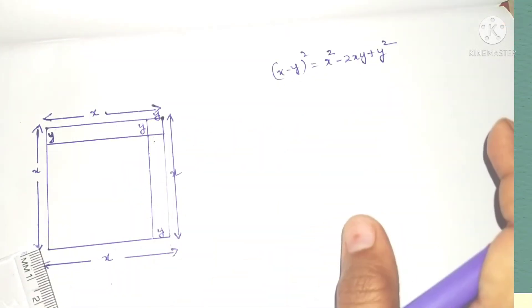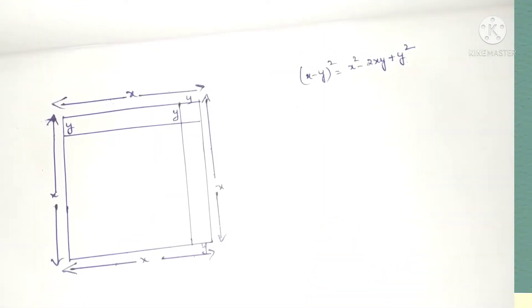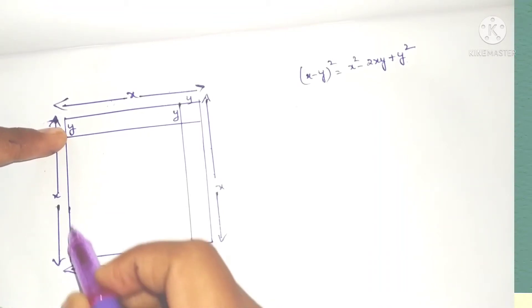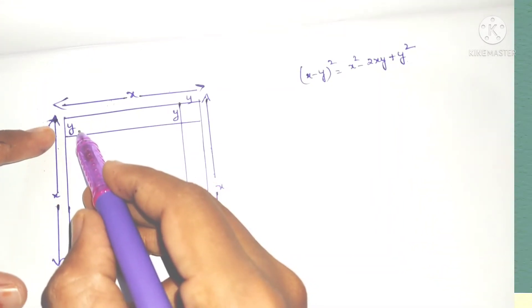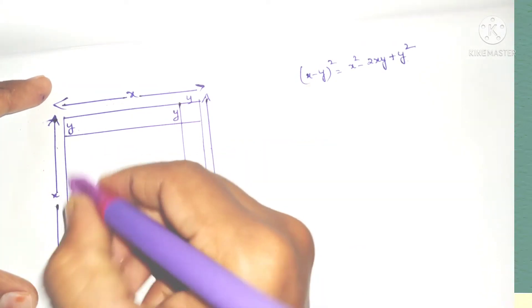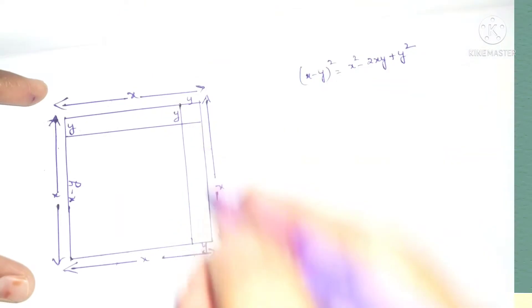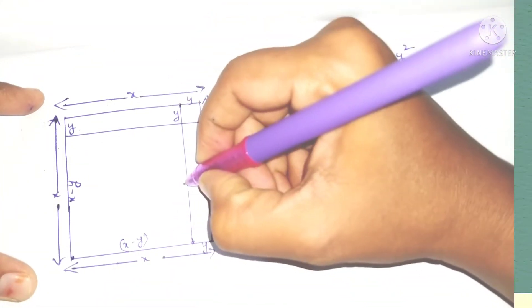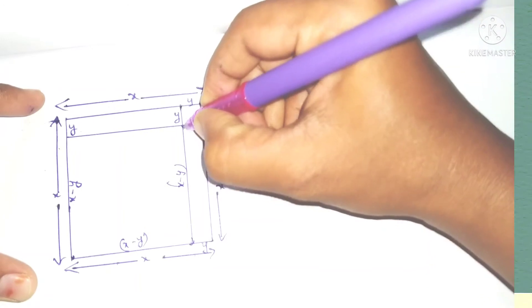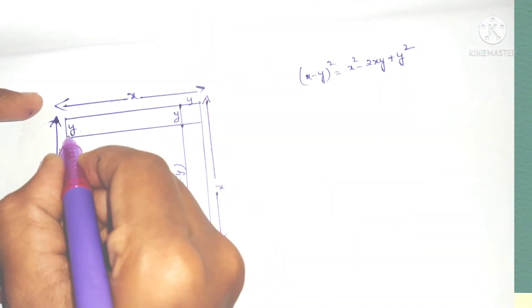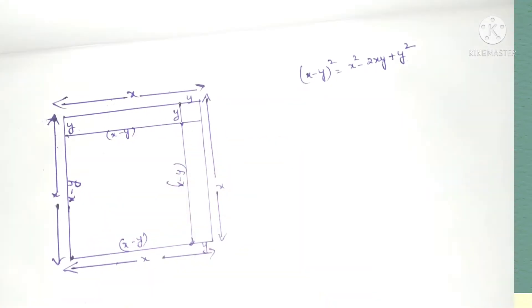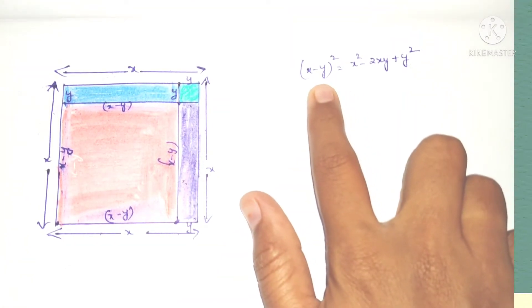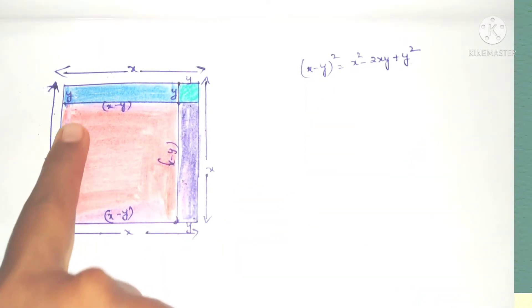Now, what is this area from here to here? This is x minus y — the total is x and we take out the y part. So this area is x minus y. From here to here also this is x minus y, and here also x minus y. From here to here this is y, and here to here also x minus y.